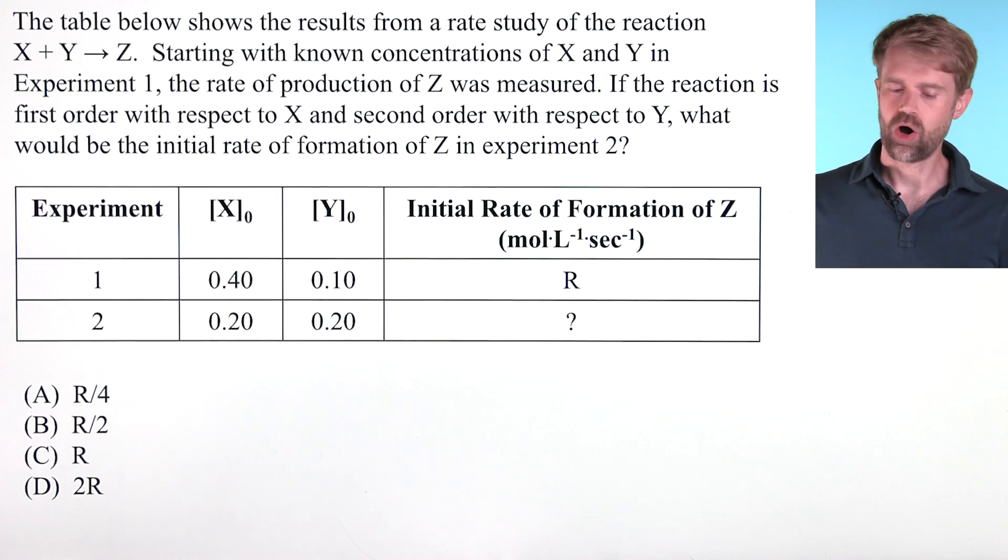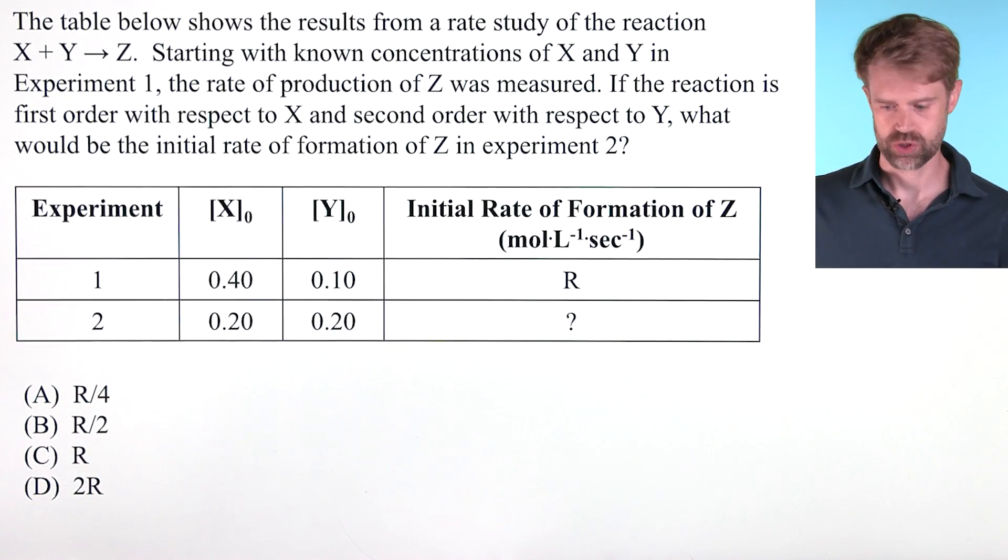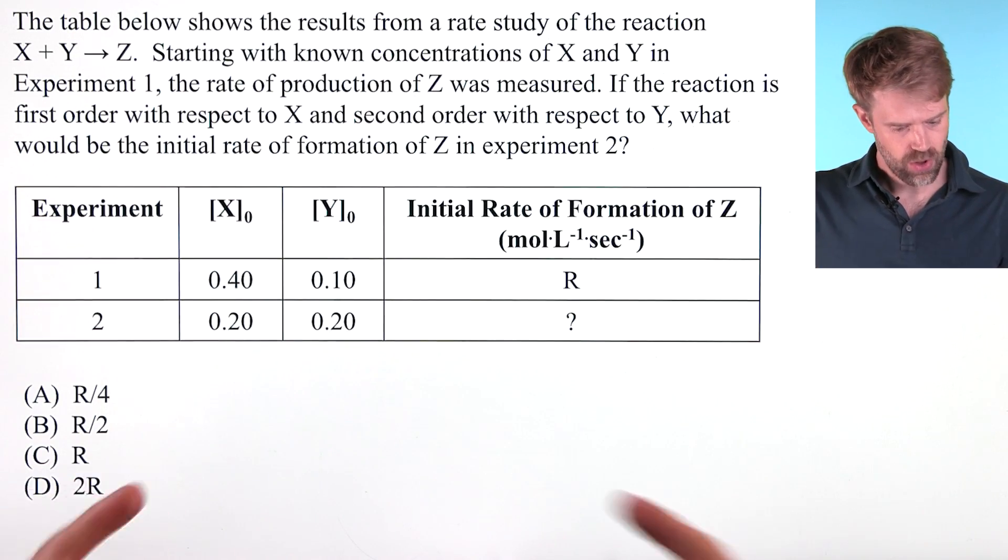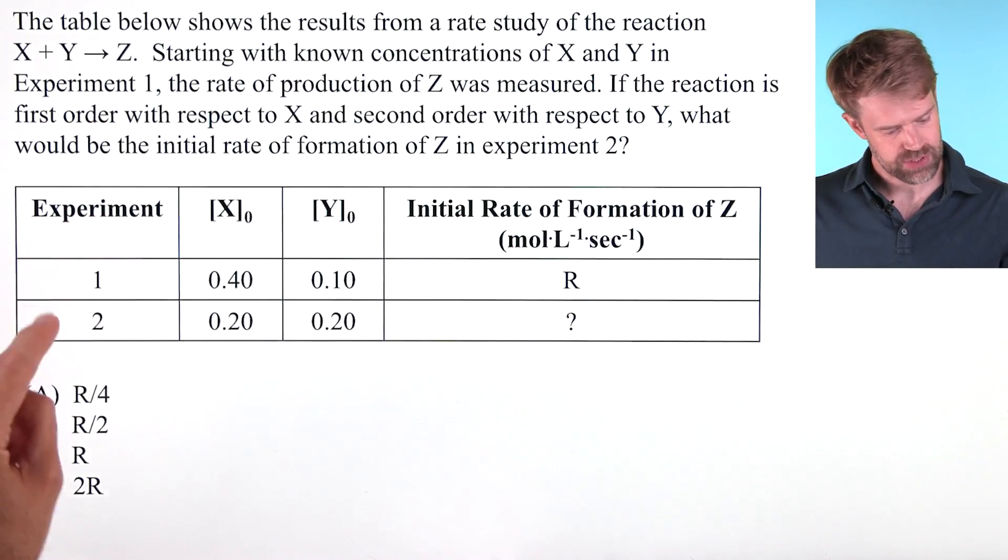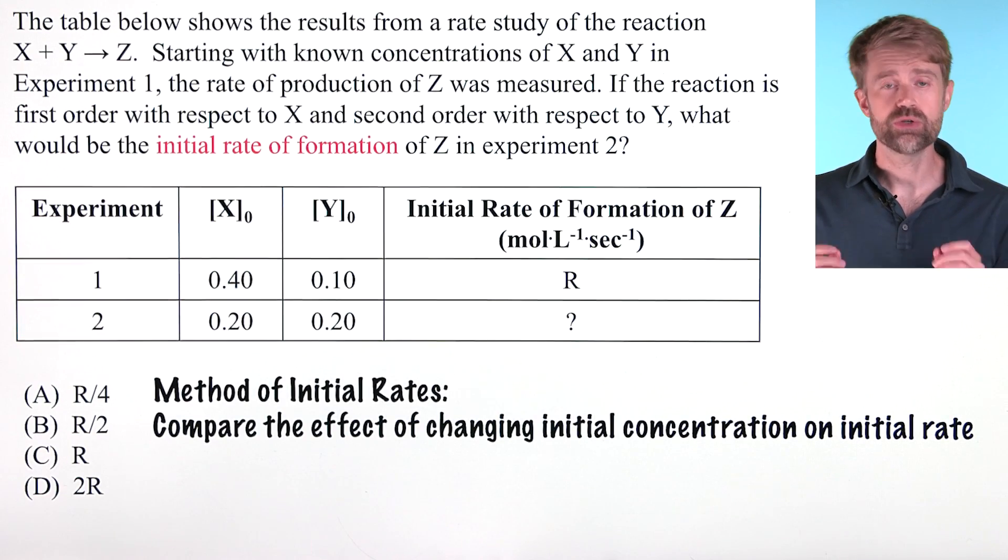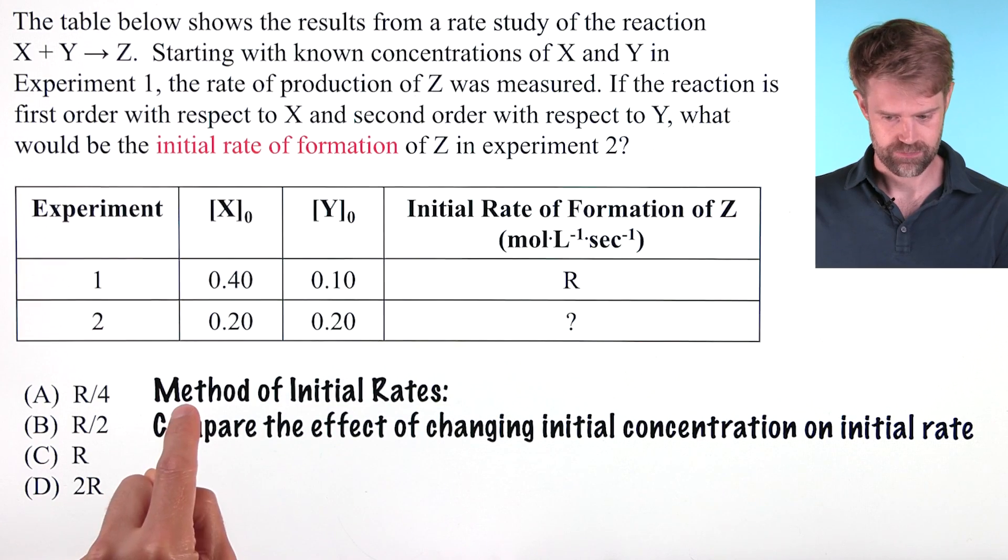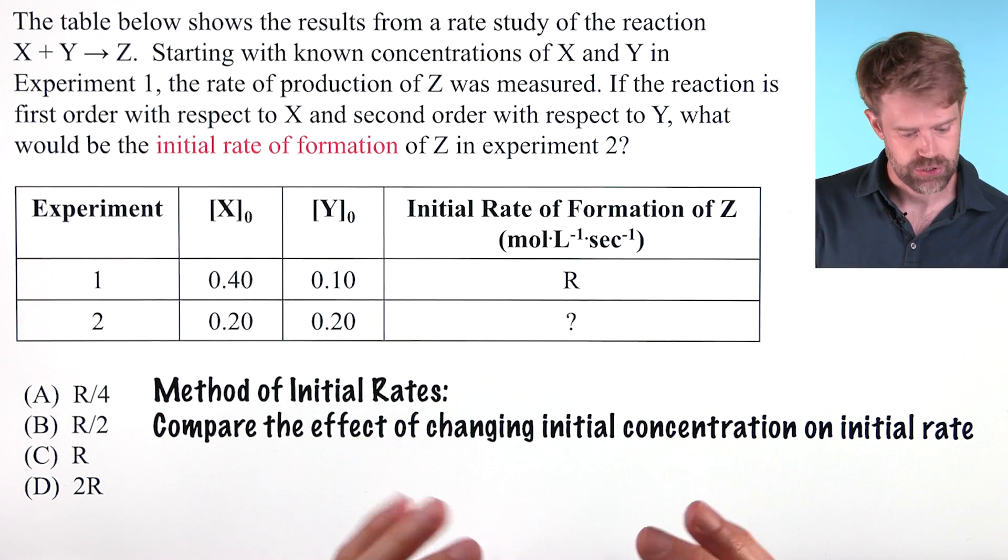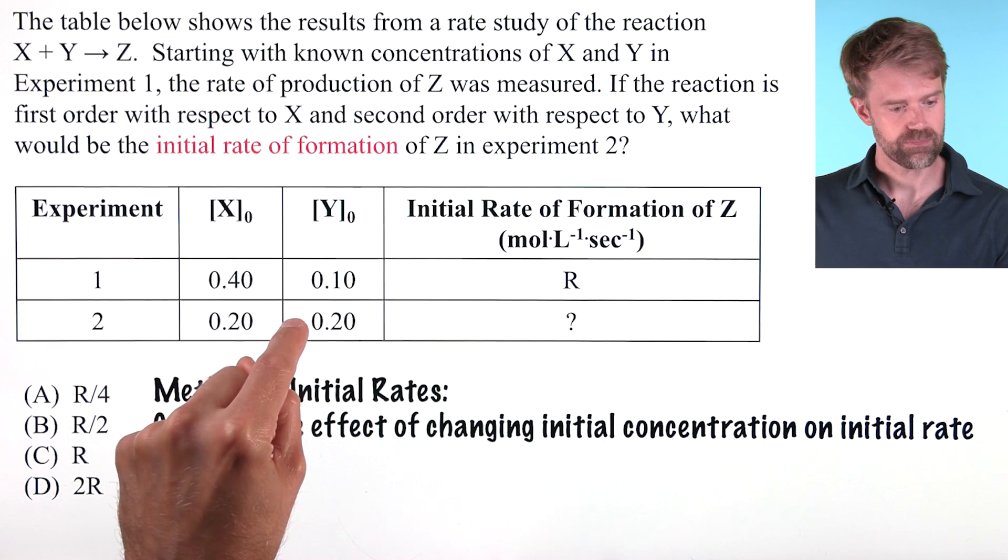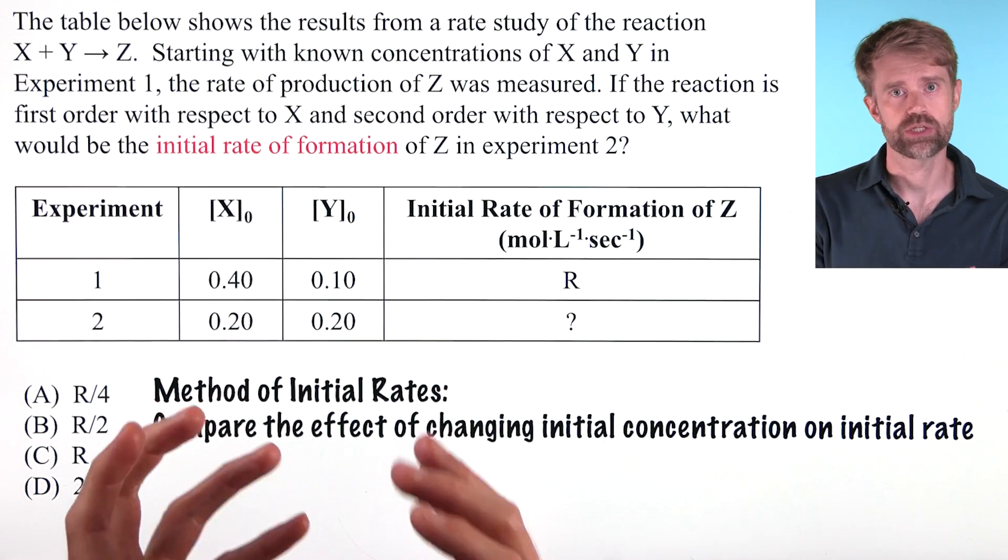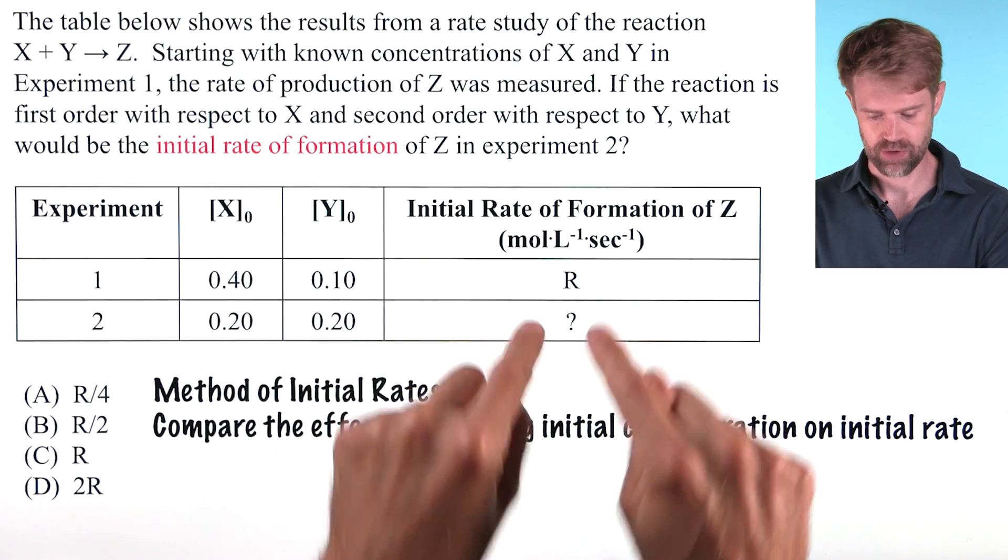The AP exam often asks rate law and kinetics questions like this in the multiple choice section. You're usually given a table with initial concentrations and rates for a few different experiments. These questions usually focus on what we call the method of initial rates. We look for changes in the initial concentration of a reactant and see what effect those changes in concentration have on the initial rate of reaction.